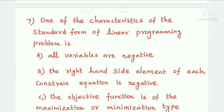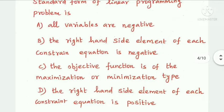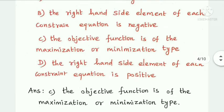Next question: one of the characteristics of the standard form of a linear programming problem is — all variables are negative, the right-hand side element of each constraint equation is negative, the objective function is of the maximization or minimization type, or the right-hand side element of each constraint equation is positive. Option C is the answer: the objective function is of the maximization or minimization type.